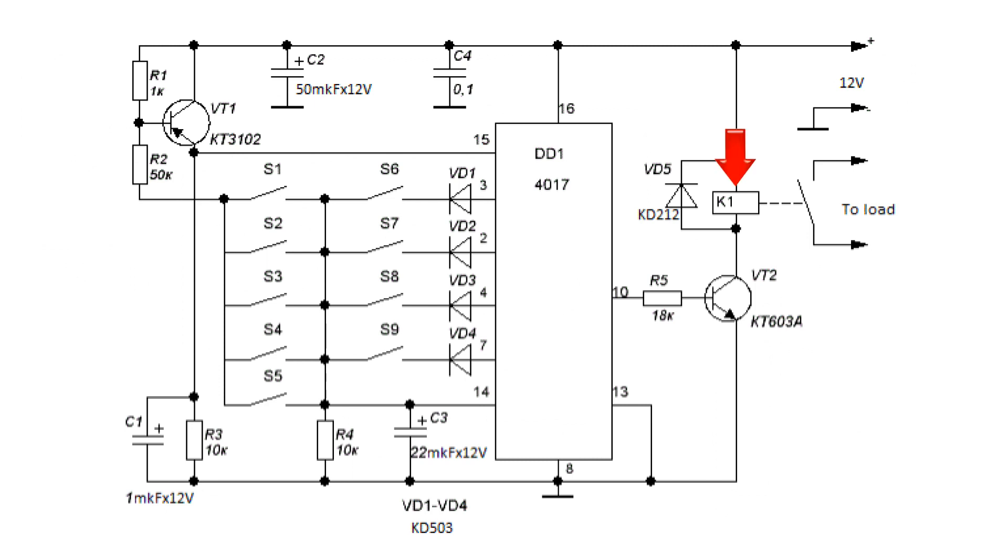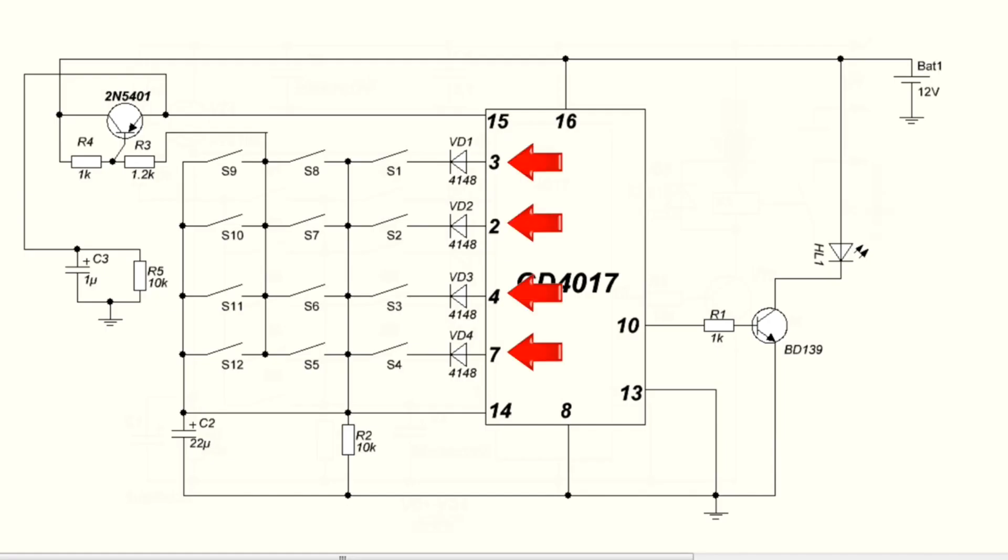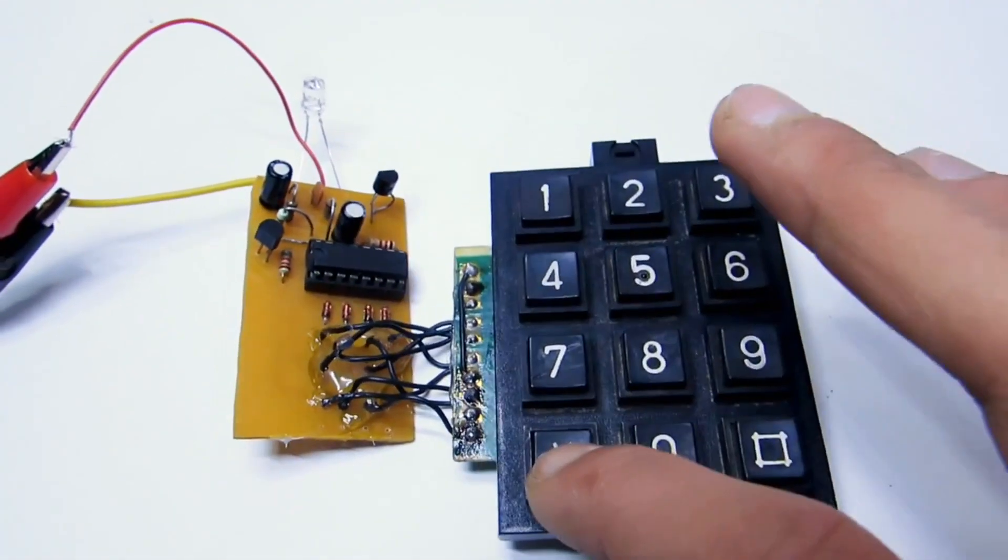For example, this load can be relay coil which will switch more powerful network device. In this case use only four outputs of chip and the number of decoding keys is equal to 4. These buttons have to be pressed in the correct order. If you break the order the lock will not open.